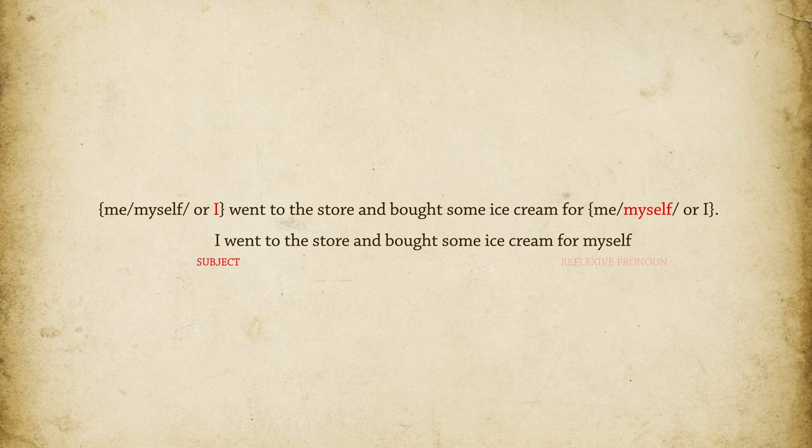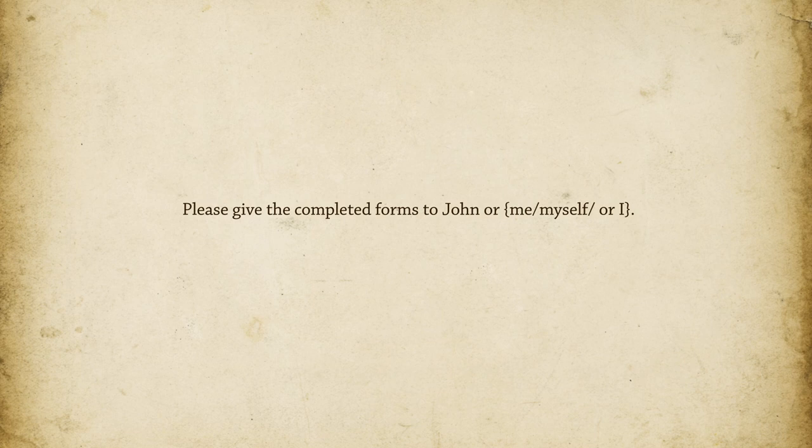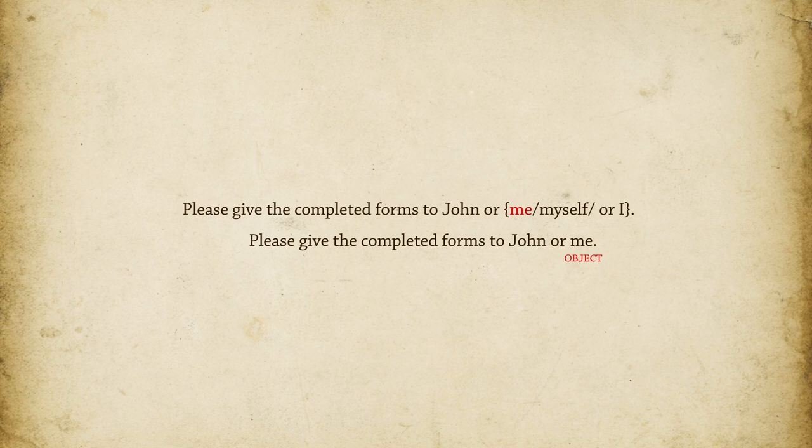'Please give the completed forms to John or me, myself, or I.' Answer: 'Please give the completed forms to John or me.' Here, 'me' is the object. Remember, you can simplify by taking out 'John' and reading the sentence to see if it makes sense: 'Please give the completed forms to me.'